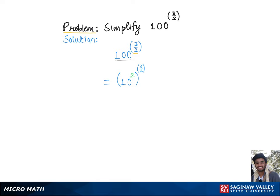Now we will further simplify this using the rule of exponents, according to which we basically need to multiply the exponents. So we get 10 raised to the power of 2 times 3 halves.